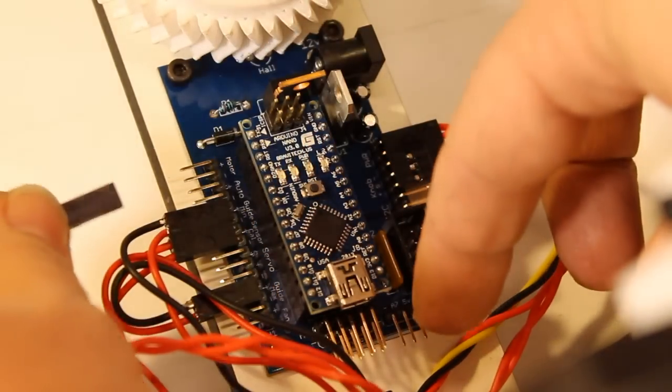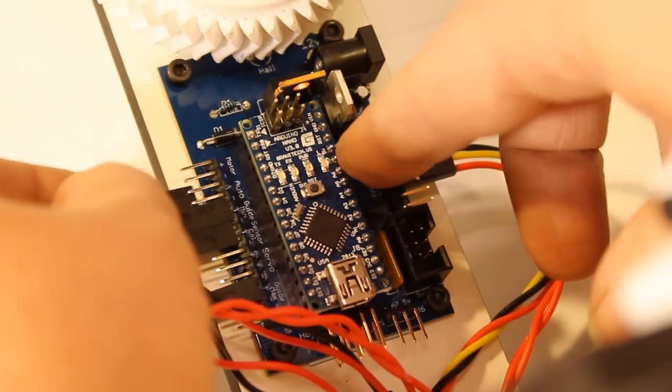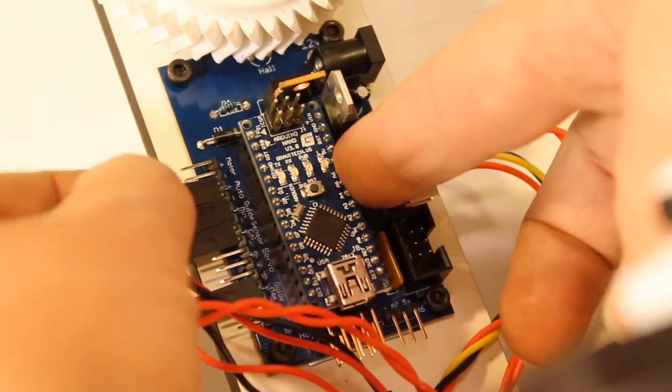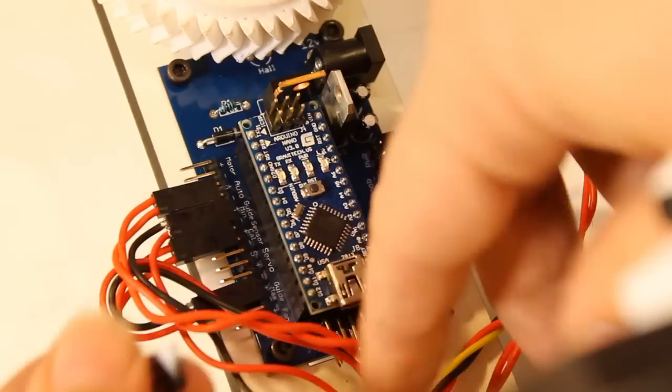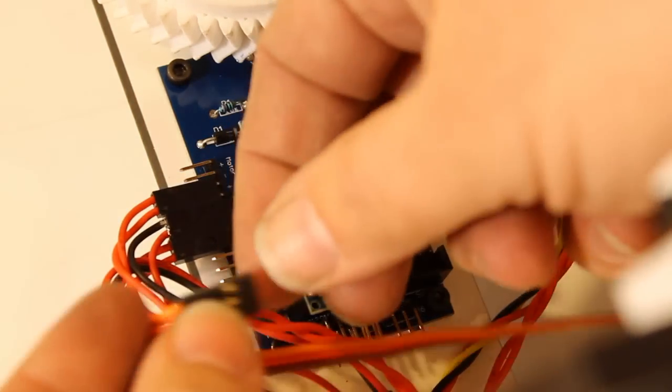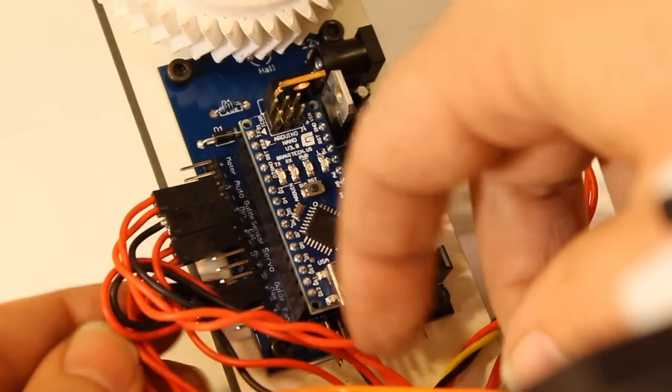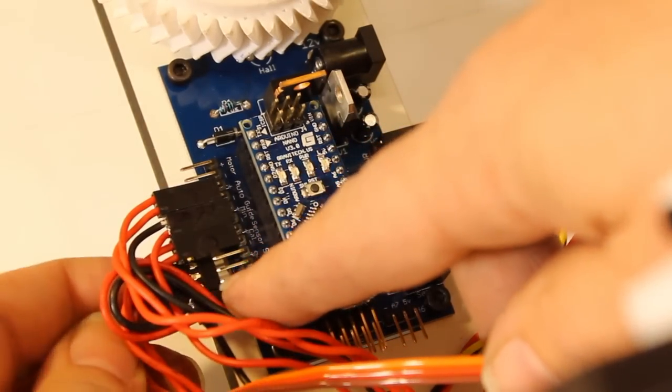This one is A for auto. This is the switch that switches between auto and manual mode. And then the servo plug goes here where it says servo. And the brown wire point is at the bottom.